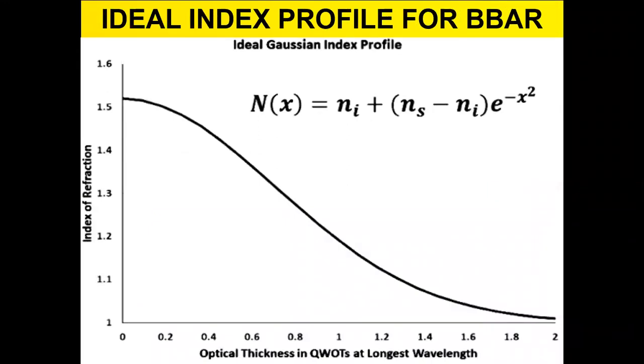In my book some time ago, I published my thought that the ideal anti-reflection coating is an index profile from the substrate to the media, in this case let's say crown glass to air, where the index refraction changes in a Gaussian form expressed by this formula.